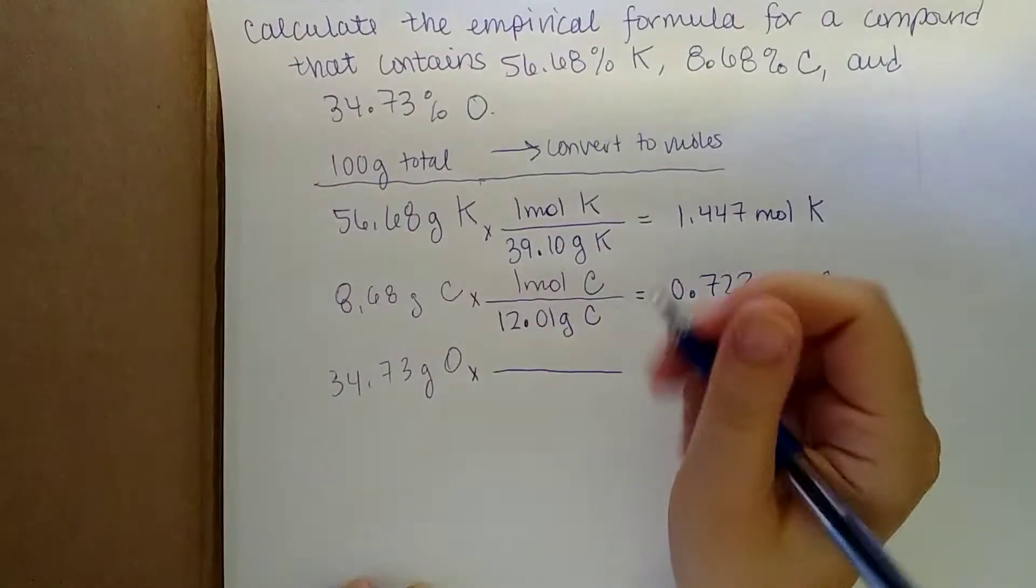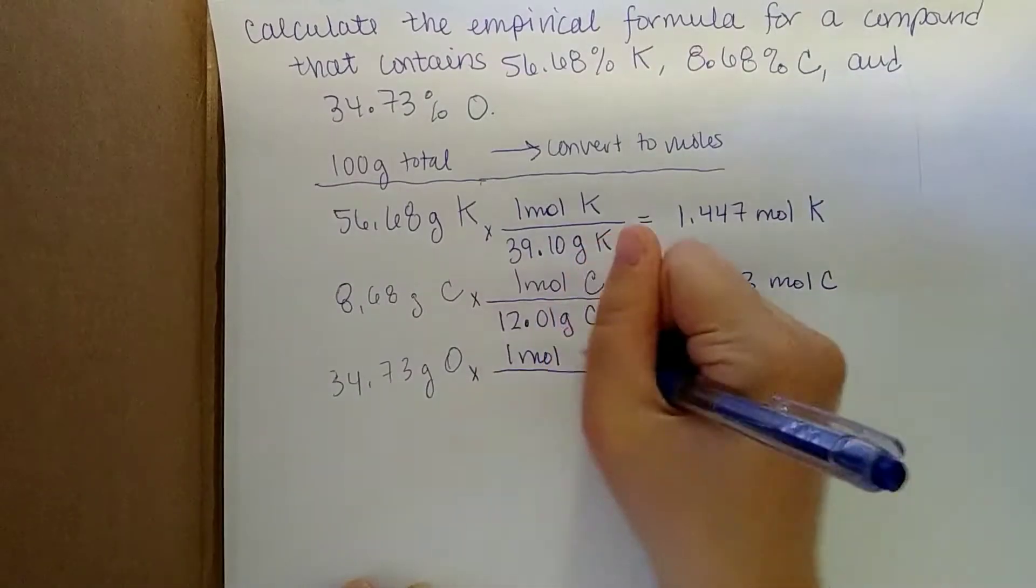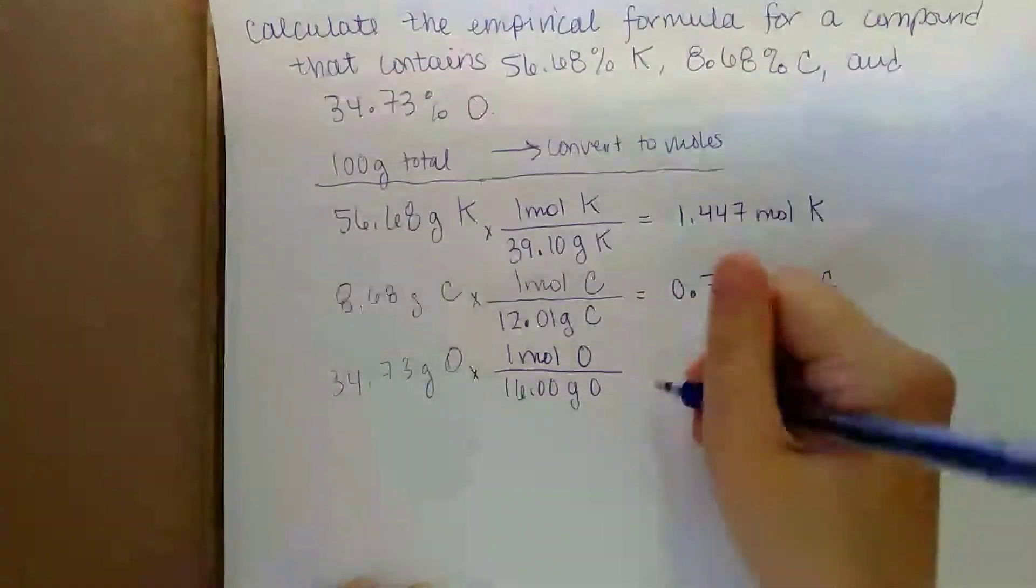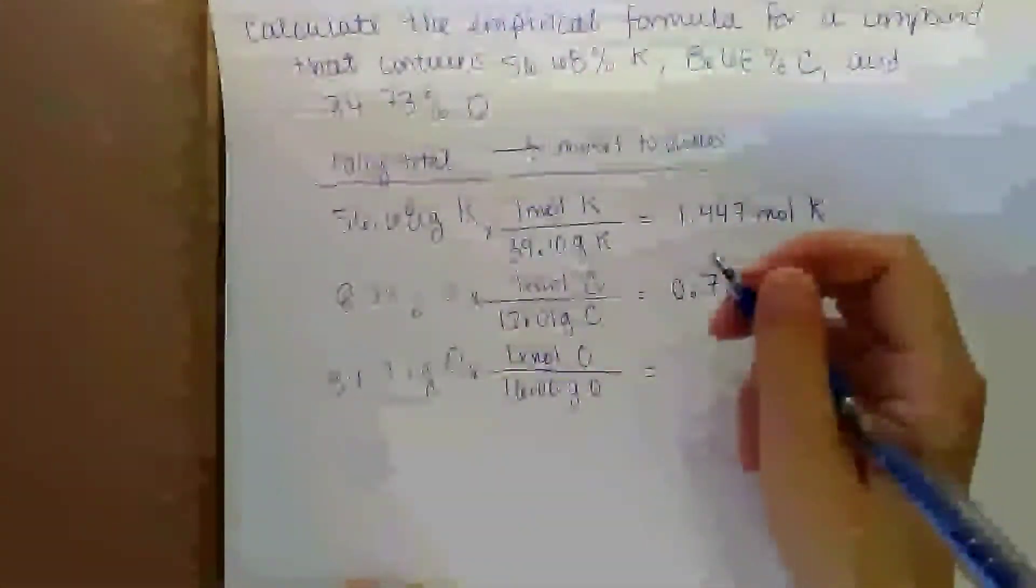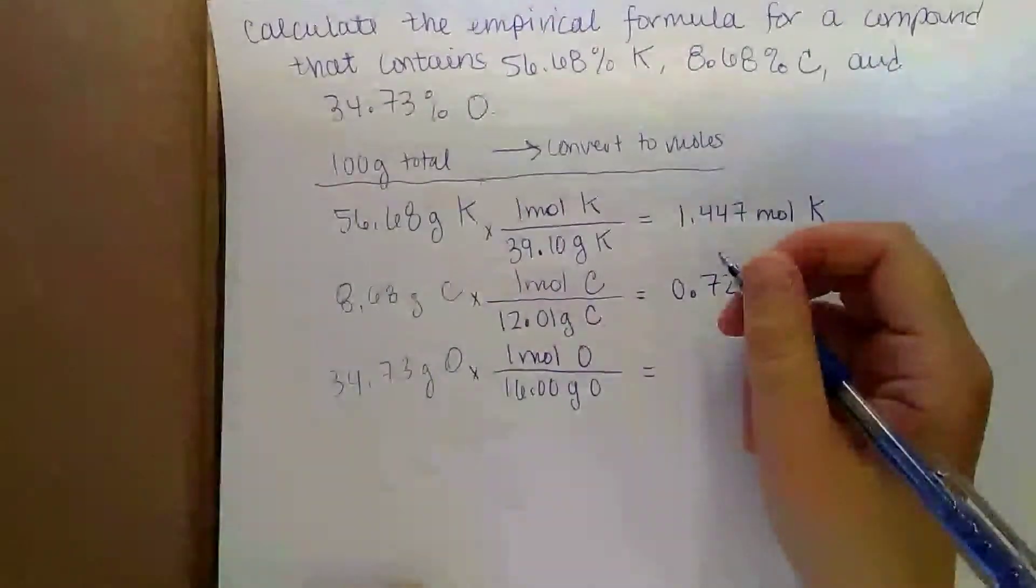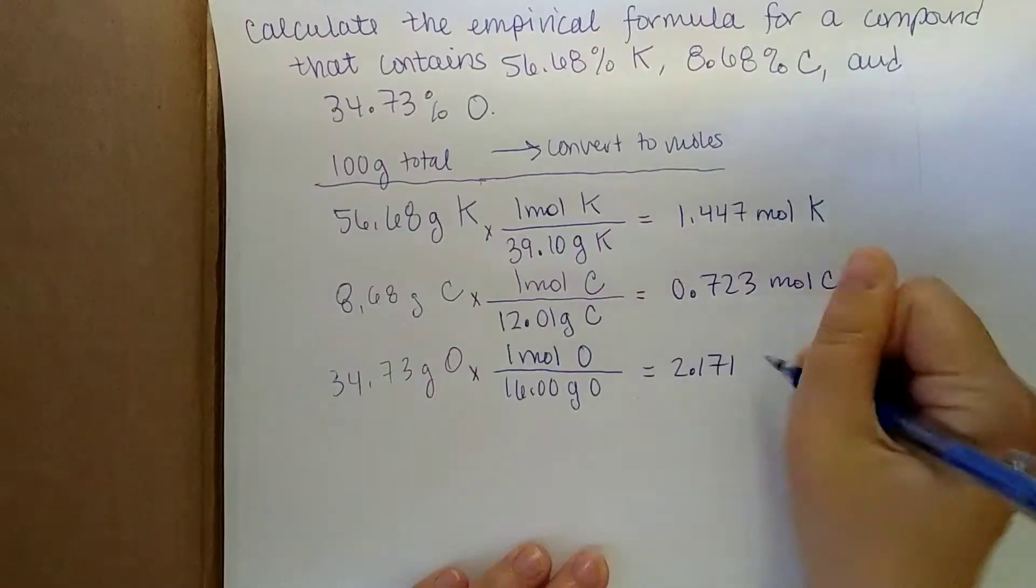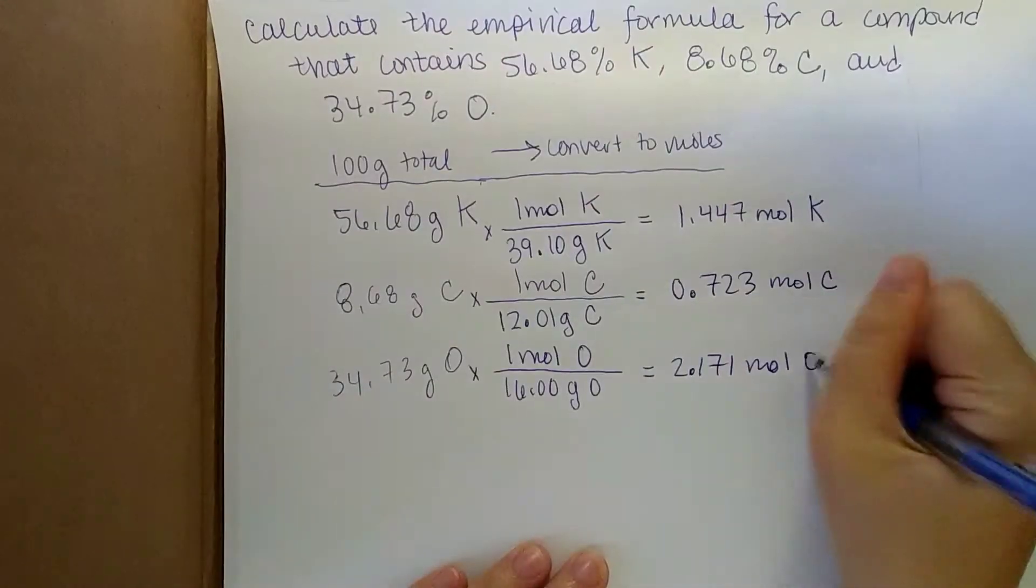And then finally, for the oxygen, we know one mole of oxygen is 16.00 grams of oxygen. And dividing this across gives us 2.171 moles of oxygen.